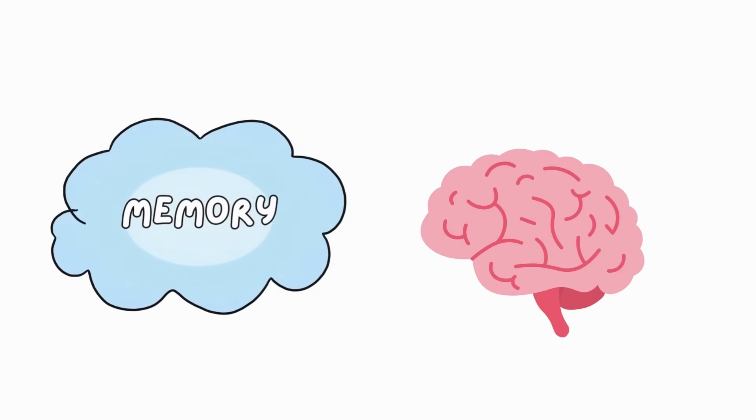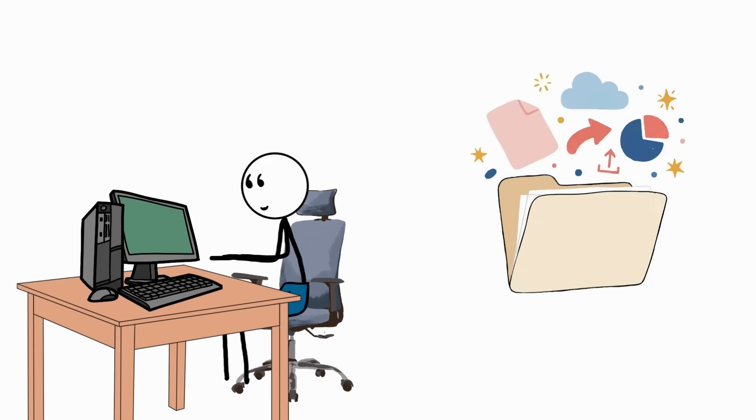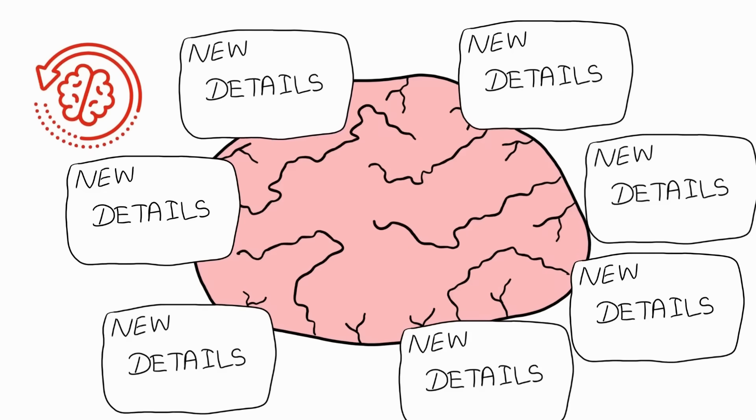something that your brain does a lot too. When you retrieve a memory, your brain reactivates it, kind of like opening a file on a computer. However, when it restores that memory, new details often sneak in. After a few cycles, the original memory gets overwritten.